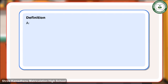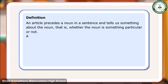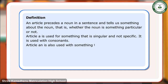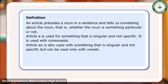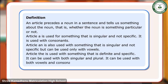Definition: An article precedes a noun in a sentence and tells us something about the noun — that is, whether the noun is something particular or not. Article A is used for something that is singular and not specific; it is used with consonants. Article AN is also used with something singular and not specific, but only with vowels. Article THE is used with something definite and specific; it can be used with both singular and plural, and with both vowels and consonants.